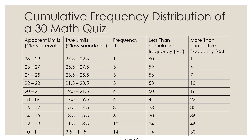For the less than cumulative frequency, we start from the lowest boundary. We write 14 first, then 14 plus 10 equals 24; 24 plus 6 equals 30; 30 plus 8 equals 38; 38 plus 6 equals 44; 44 plus 6 equals 50; 50 plus 3 equals 53; 53 plus 3 equals 56; 56 plus 3 equals 59; and 59 plus 1 equals 60.